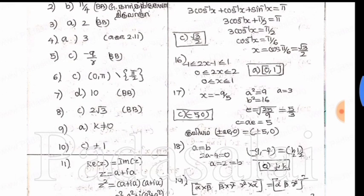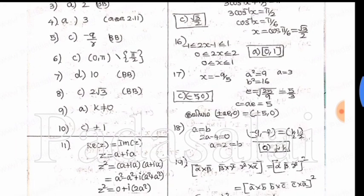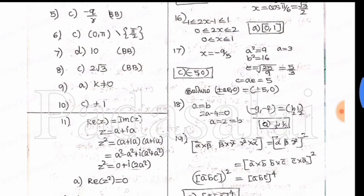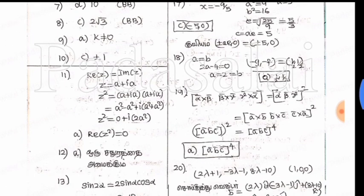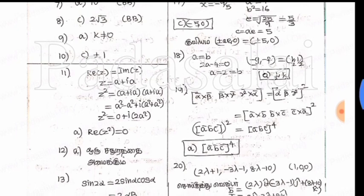So, the sixth one is C, 2√3. The ninth one is D. The 11th one is A, real number of z square equal to 0.